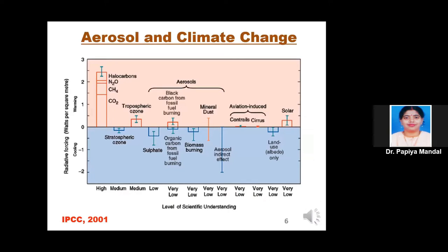Aerosol has an effect on climate. The IPCC reported in 2001 that aerosol has both warming and cooling effects. Greenhouse gases like carbon dioxide, methane, hydrogen compounds, solar radiation, mineral dust, and tropospheric ozone have only a warming effect, whereas aerosol has both warming and cooling effects. Especially black carbon or elemental carbon, which comes from fossil fuel burning, contributes to warming effects. So aerosol is directly or indirectly linked with climate change.